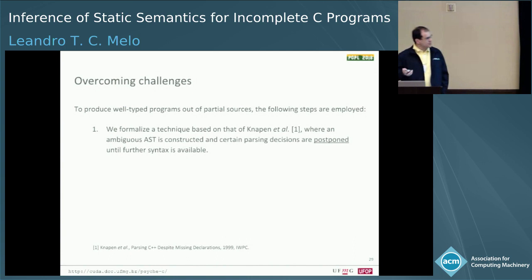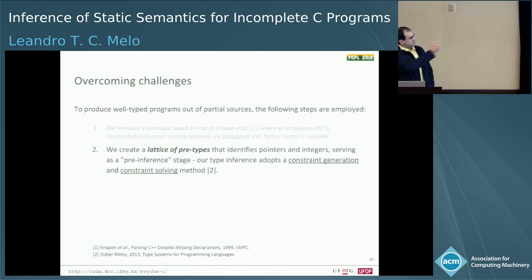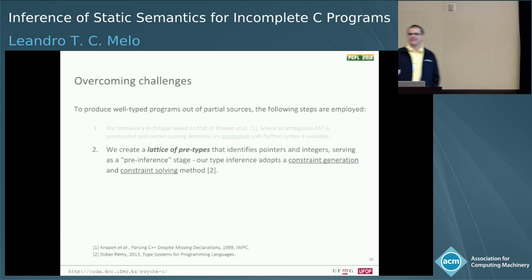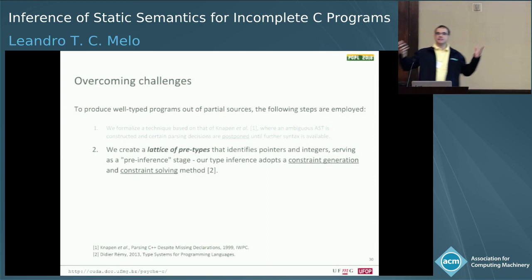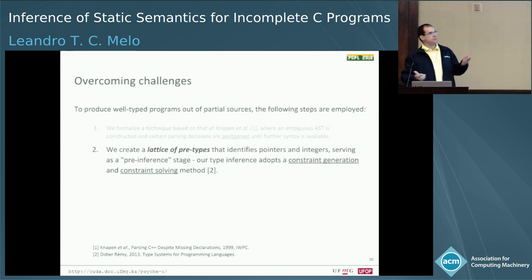About the null pointer thing: what we do is have a pre-inference stage, and the result of this pre-inference is what we call pre-types. What this pre-inference does is serve as a way for us to identify the use of those names in the entire program, so we know whether they are actually a pointer or an integer value. We produce type inferences based on constraint generation and then constraint solving. Eventually we have constraints that restrict the type of a particular name, so we know whether it's a pointer or an integer.